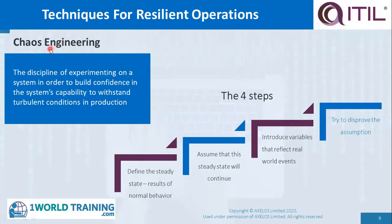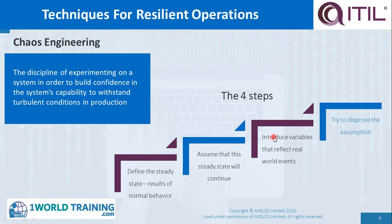The next technique is chaos engineering. This is the discipline of experimenting on a system in order to build confidence in the system's capability to withstand turbulent conditions in production. The four steps of chaos engineering are: first, define the steady state or the results of normal behavior; second, assume that the steady state behavior will continue; third, introduce variables that reflect real-world events and try to disprove the assumption; and fourth, exercise caution, because experimenting with production systems should not lead to major outages. There may be some small glitches, which may be okay, but such experimentation should not lead to several hours of outages on critical applications.